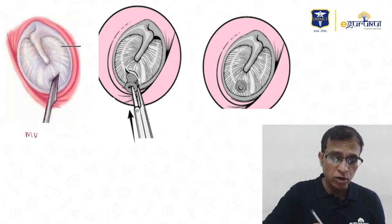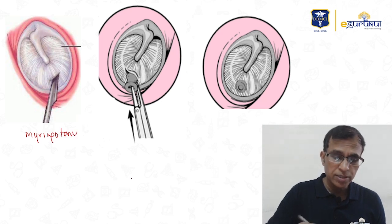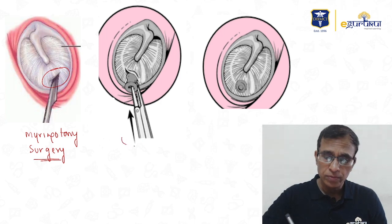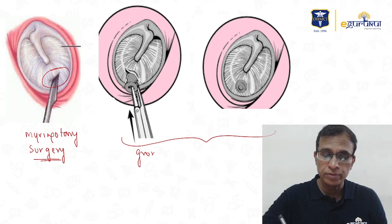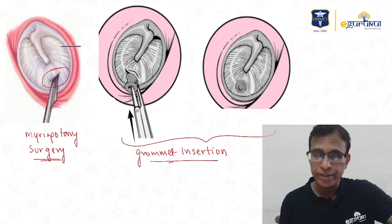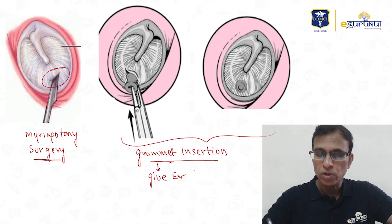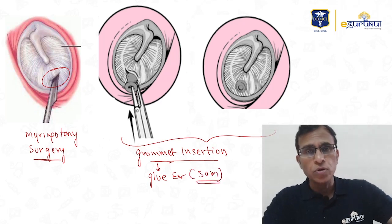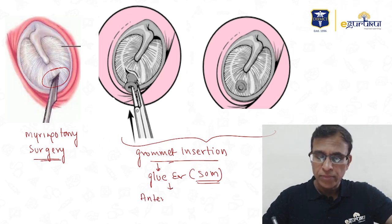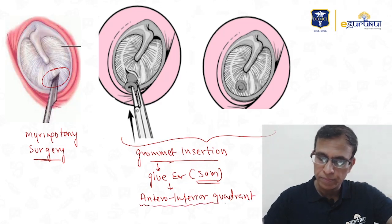The first image is myringotomy being done — a surgery where a hole is created on the tympanic membrane. The next two images show grommet insertion, where a grommet is inserted into the ear through that hole. This is done for blue ear, or SOM. Myringotomy and grommet insertion is done in the anteroinferior quadrant of the tympanic membrane.